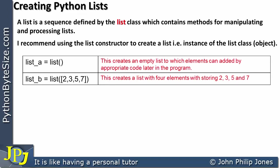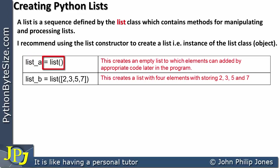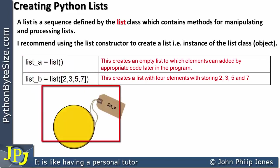Consider these two examples. The first one is list_a is assigned, and we have list and the brackets. This is a constructor that will construct a list, but if you look in the brackets, there is no definition of a list. There are no elements suggested; the brackets are empty. This creates an empty list to which elements can be added by appropriate code later in the program. A good visual representation of an empty list is shown here.